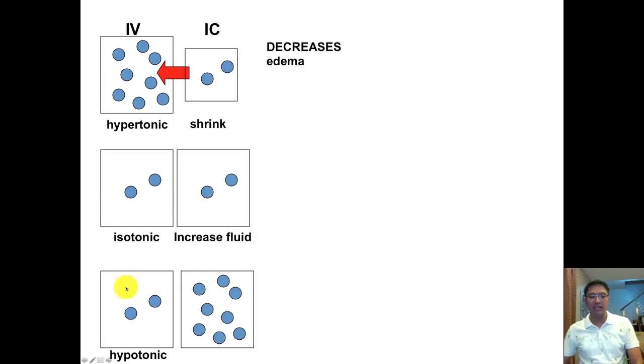And so if the hypotonic has low ability to pull water, instead of pulling water, it gives water to the cells. And as it gives water to the cells, what do you think will happen to the cells? If you give a hypotonic solution, the cells will swell.